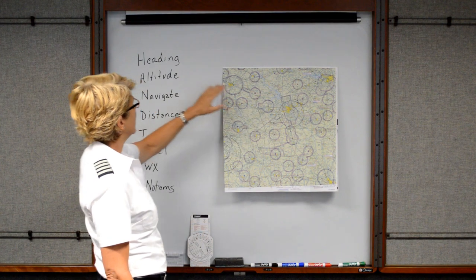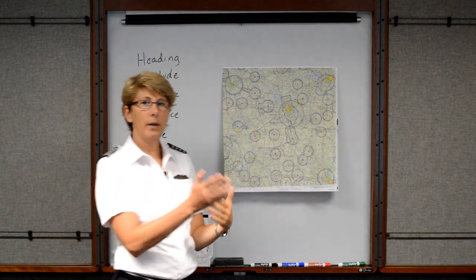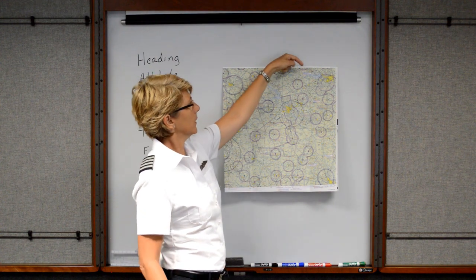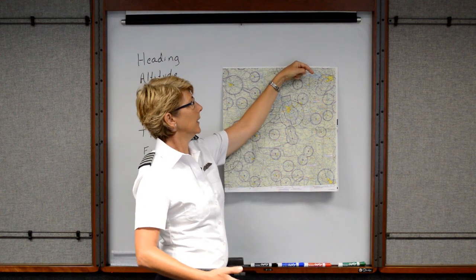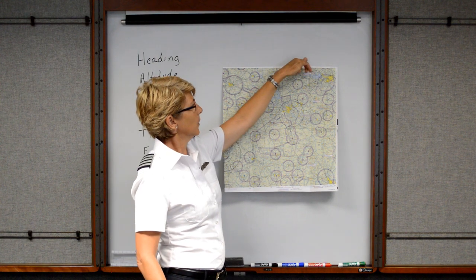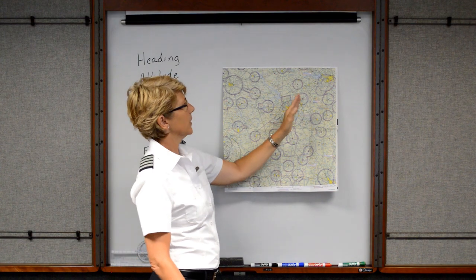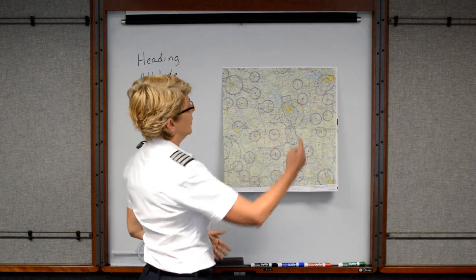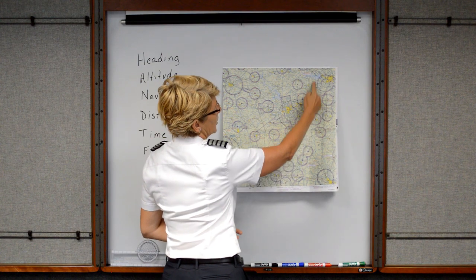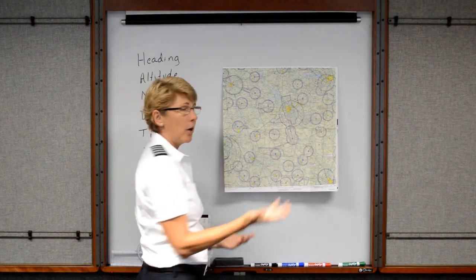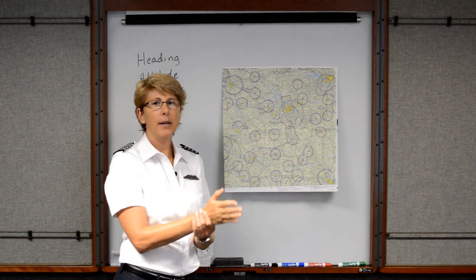The first thing we need to do is pick a logical heading that will get us going in that direction, because we wouldn't want to continue toward the turbulence, thunderstorm, and lightning. If I am going to divert, I should pick a logical heading and turn the aircraft that way. It doesn't have to be exact at this point. Knowing that Aiken is to the south, a heading of 200 might work. So I would immediately turn the airplane and start flying a heading of 200.